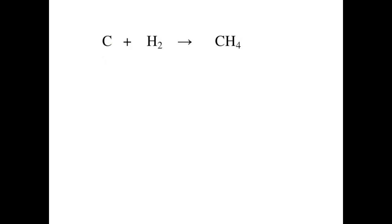On the reactant side, you have one carbon and two hydrogen. On the product side, you have one carbon and four hydrogen. In order to balance this out, you would use the coefficient of two. You would put the two in front of the hydrogen here and add the two atoms, which would give you four hydrogen, which would make this equation balanced.